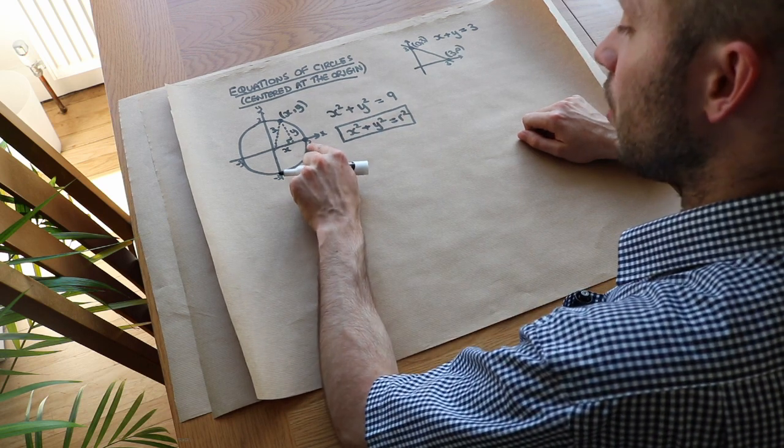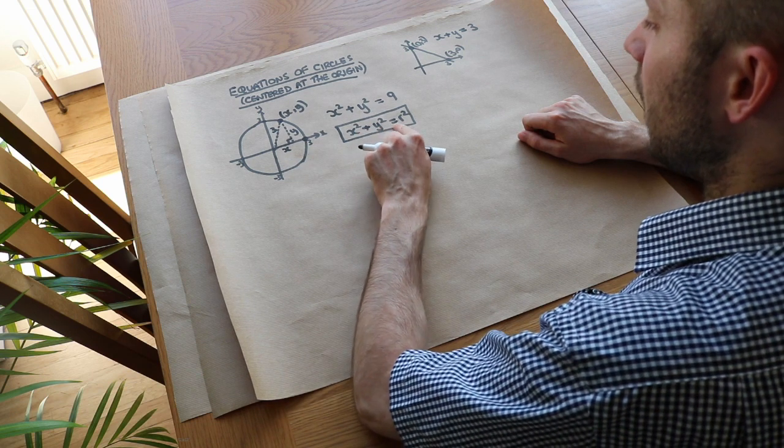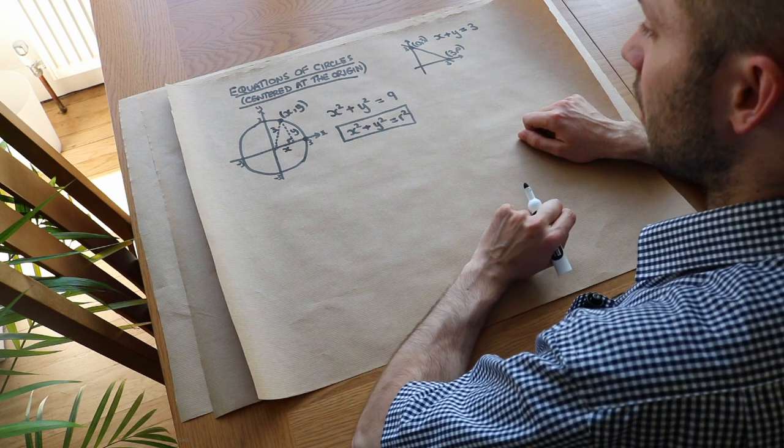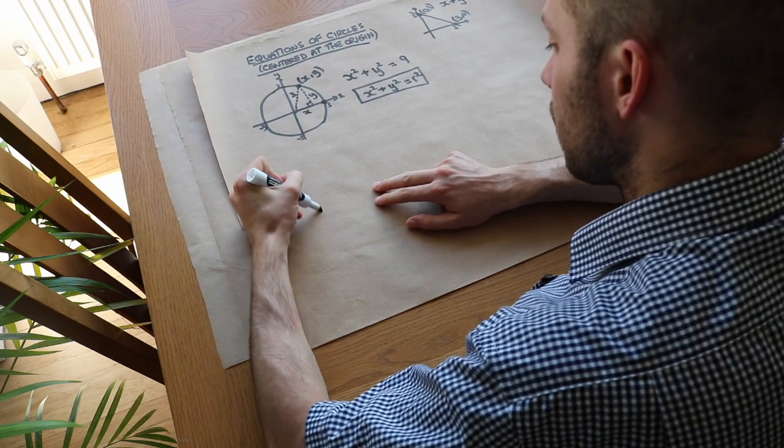In this particular case, the radius was 3, so it would be x squared plus y squared equals 3 squared, which is 9. So let's just pick a few examples.